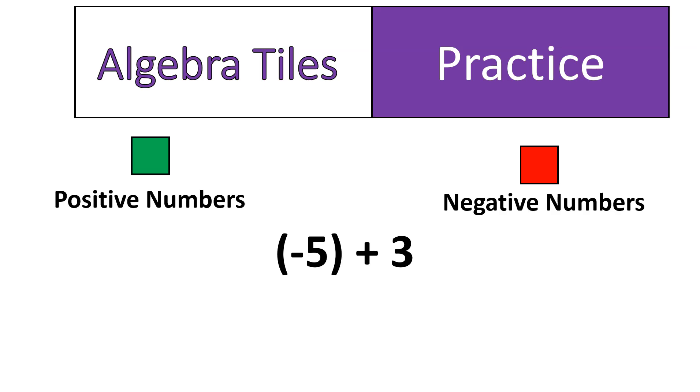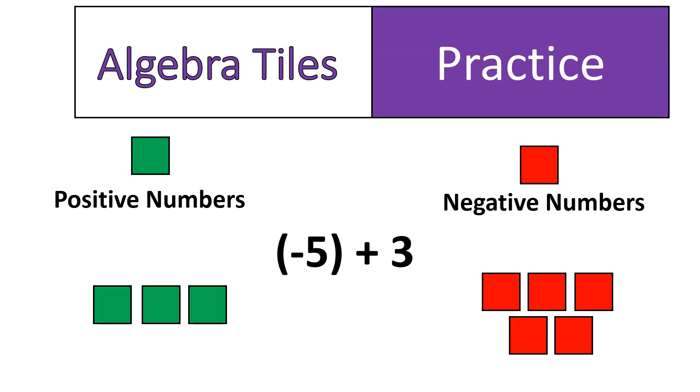Here's an example that I think helps to show why this has value. So this one, I have negative five plus three. With negative five plus three, I'm going to set it up in this way. I have five negatives and I have three positives.